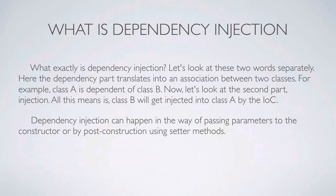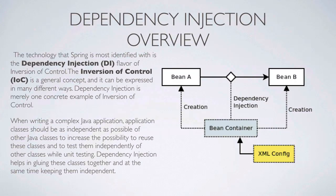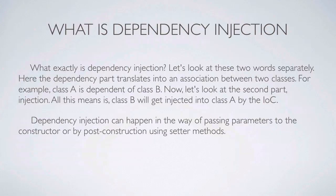For example, class A is dependent on class B. Now the second part — 'injection' — simply means class B will get injected into class A by the IoC, the inversion of control. Dependency injection can happen by passing parameters to the constructor, or by post-construction using setter methods.